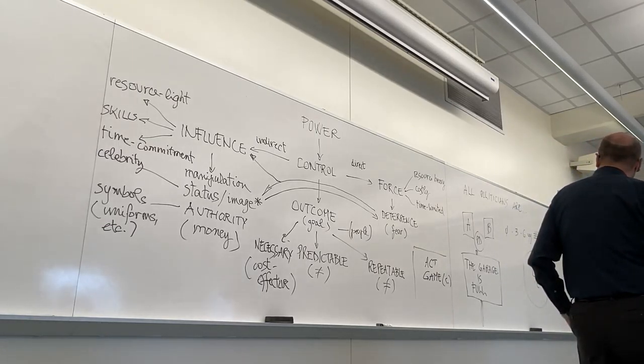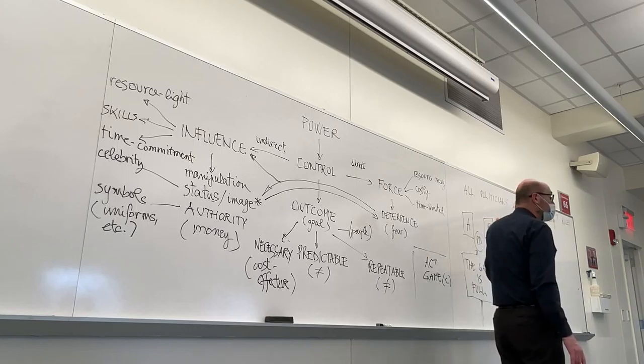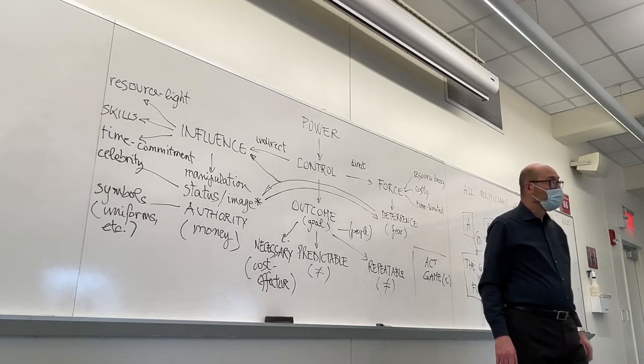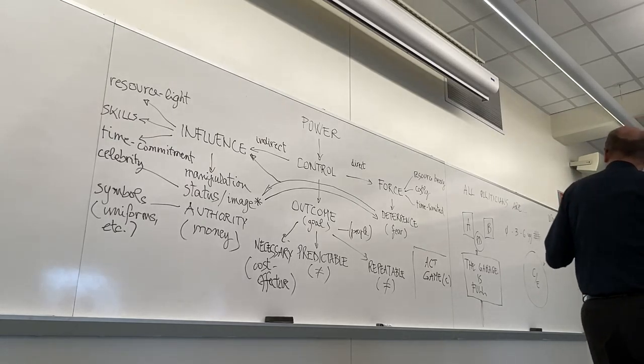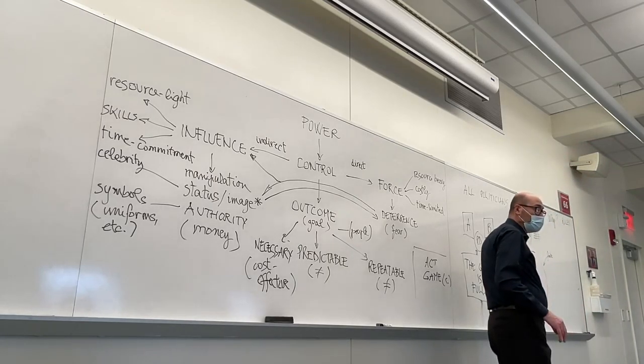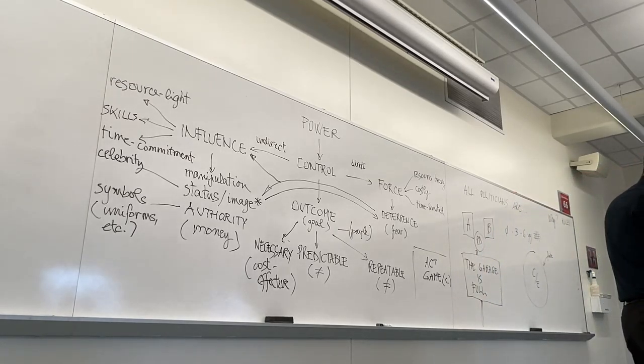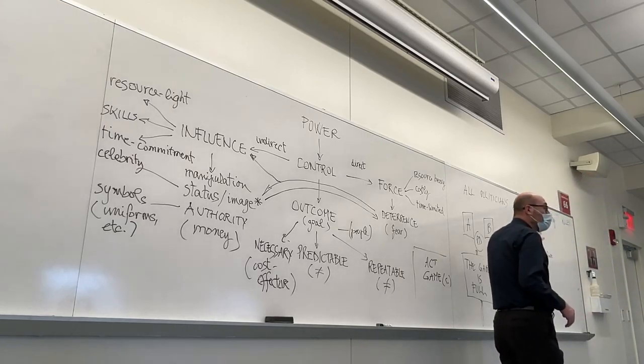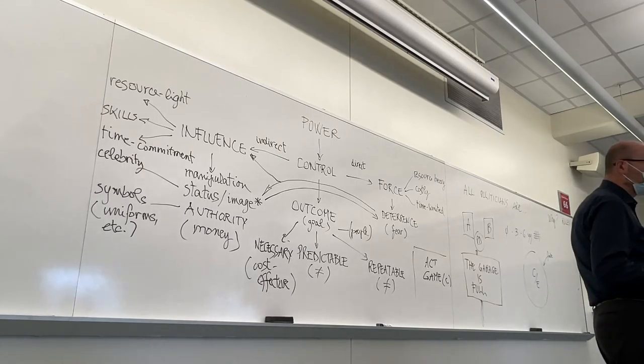We started the week with a question implied in the example of the autocomplete answers provided by Google when I typed 'all politicians are' and all kinds of awful things came out as possible answers, which means those are the most frequent kinds of input words used by users. The implied question is, why do we find this popular perception that politics is a dirty business, and that all politicians, or most politicians, are crooks?